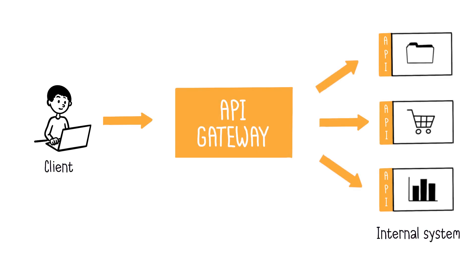The API Gateway, as its name suggests, is a device that acts as a gateway to allow external clients to use internal APIs, and thus the services behind these APIs. It saves clients from the burden of having to know the locations of each instance of the used service. They only need to contact the API Gateway.